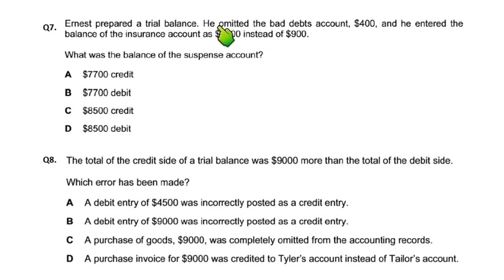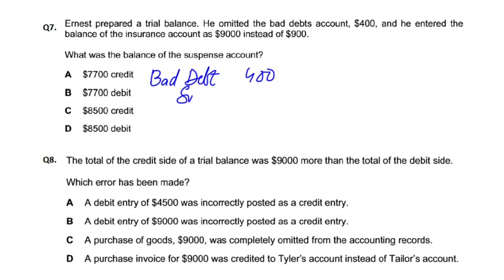First entry: he omitted bad debt — we forgot to record the bad debt. What entry will we make? Bad debt debit, $400. And where there is nothing to correspond, what is that? Suspense. If you don't record bad debt, it will affect the debtor side.